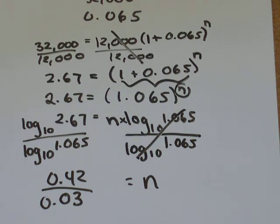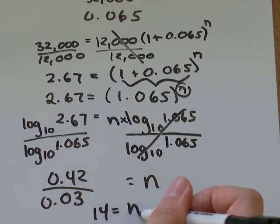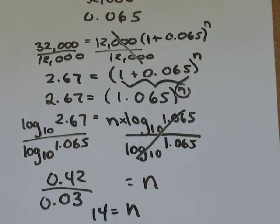I get 14 equals n. So the time period for our population to go from 12,000 to 32,000 when the rate is 0.065 is 14.